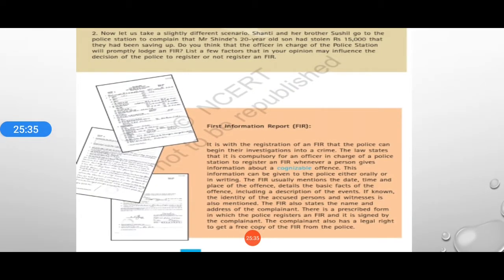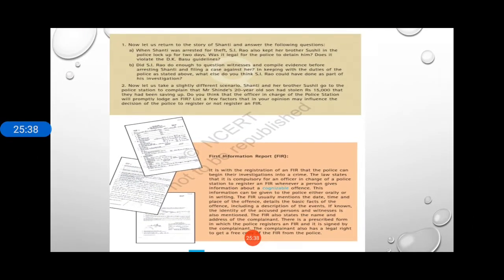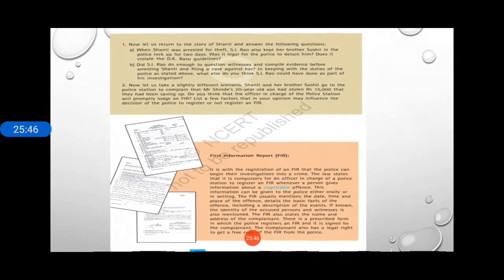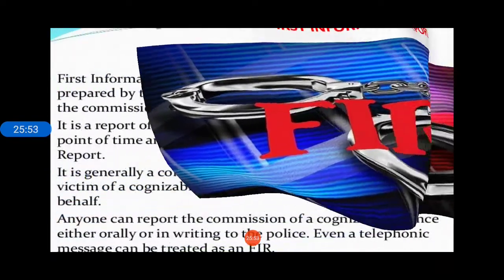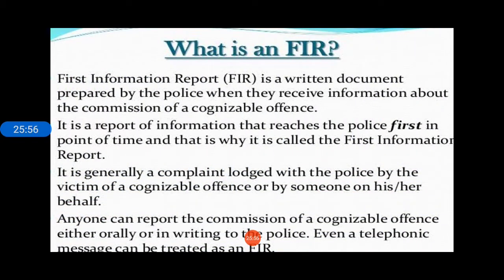FIR is a prescribed systematic form in which the police registers the complaint. It is signed by the complainant, and the complainant also gets a copy — it is a legal right to get a free copy of the FIR from the police station. The full form of FIR is First Information Report. It is a written document prepared by the police when they receive information about the commission of a cognizable offense. It is a complaint lodged with the police by the victim of a cognizable offense, or someone on their behalf.